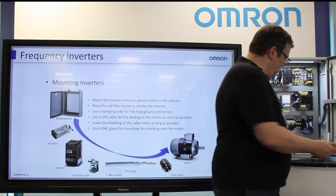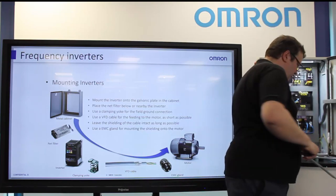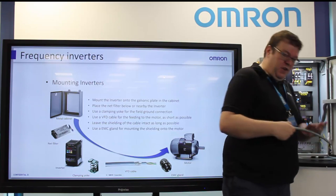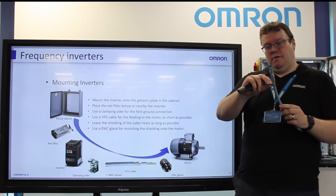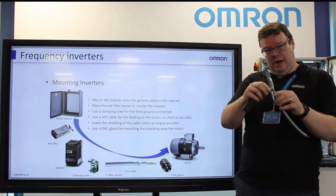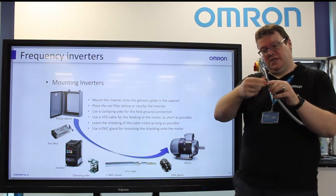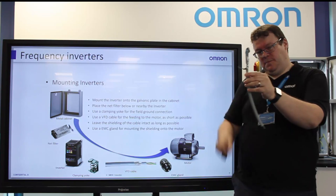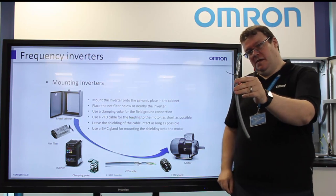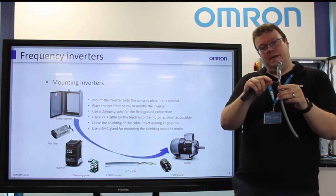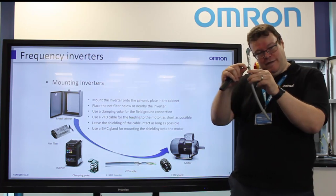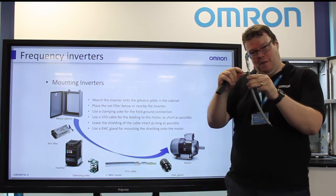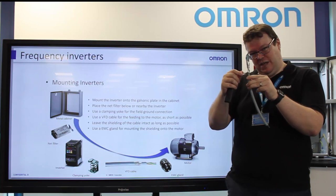One of the things we see quite often is when we have an inverter cable and a customer, rather than using the proper glands, puts it into a pigtail such as this. You'll then find that we're only using maybe 25–30 microns of a much reduced surface area.